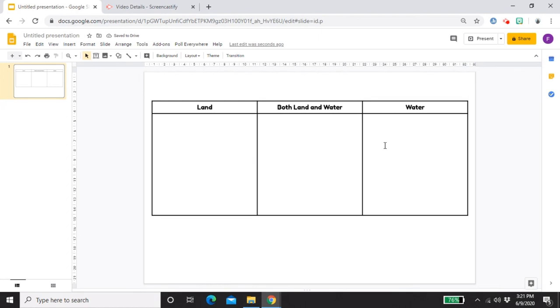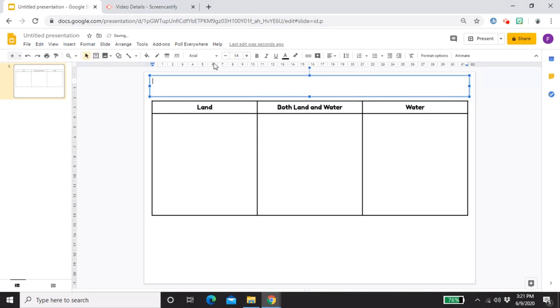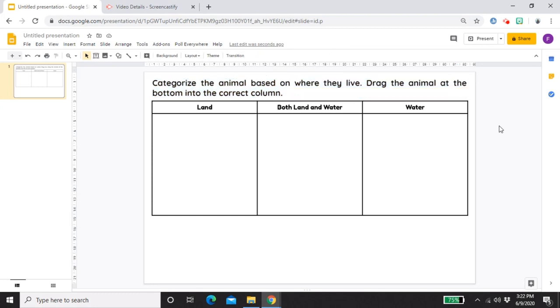Next is the font. I'll use Pidoka 1, size 18. I'll add the title here. Don't forget to center it both ways. We have here land, both land and water, then water. This table is one of the things I don't want the students to move. Next is a text box for the directions.